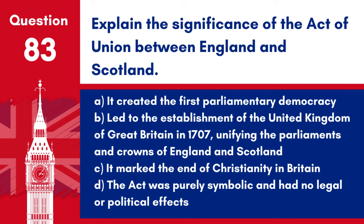Question 83: Explain the significance of the Act of Union between England and Scotland. a. It created the first parliamentary democracy. b. Led to the establishment of the United Kingdom of Great Britain in 1707, unifying the Parliaments and Crowns of England and Scotland. c. It marked the end of Christianity in Britain. Answer: b. Led to the establishment of the United Kingdom of Great Britain in 1707. The Act of Union was a landmark in British history, laying the foundations for the modern UK.